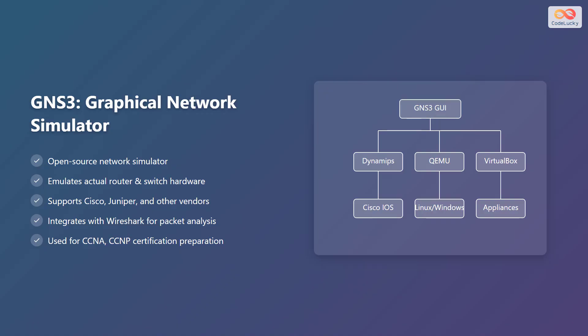GNS3 uses a Graphical User Interface, or GUI, to design the network. It then uses programs like Dynamips, QEMU, and VirtualBox to emulate real network devices and their operating systems like Cisco IOS, Linux, or Windows. These emulated network devices can then be interconnected to build a complete simulated network.